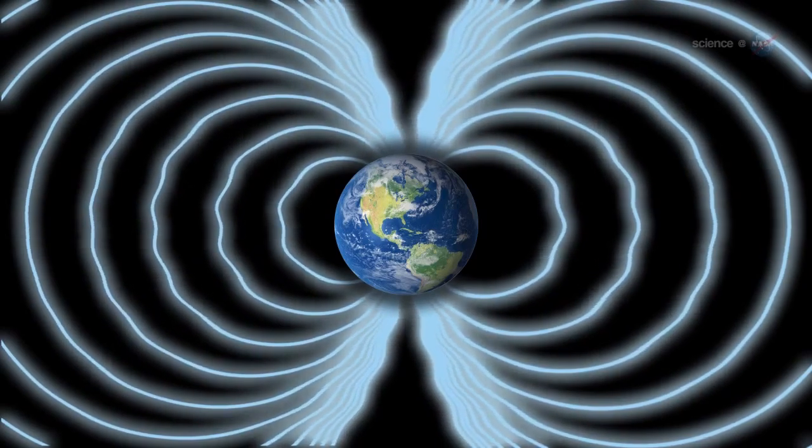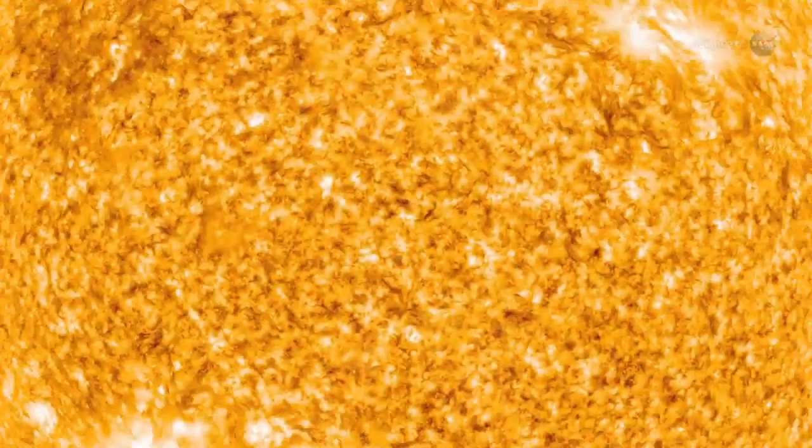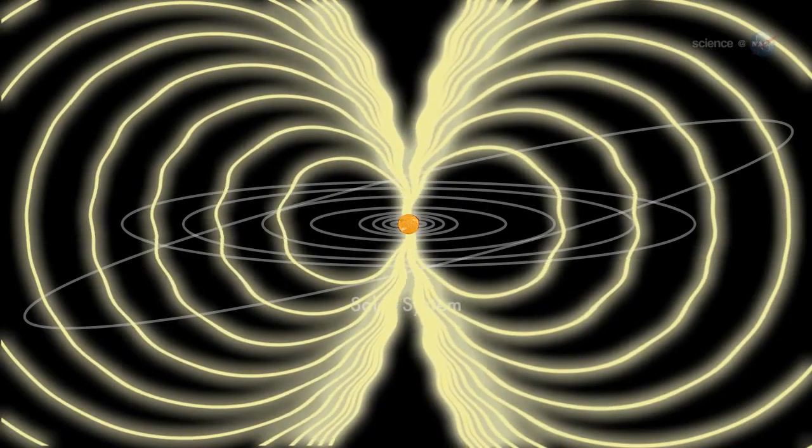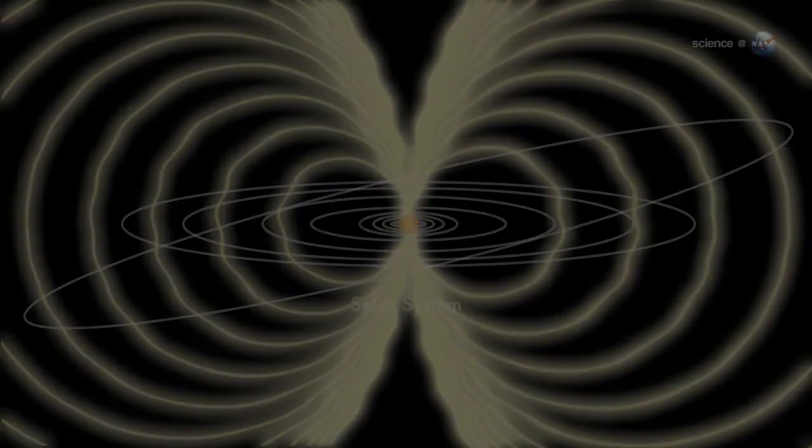Meanwhile, Earth moves through an even larger magnetic field, that of the Sun. Massive currents flowing beneath the solar surface give rise to a vast magnetic bubble that envelops every planet in the solar system.